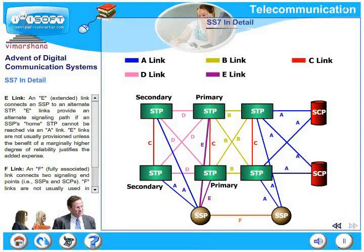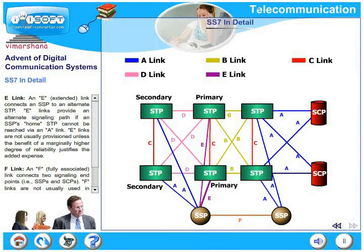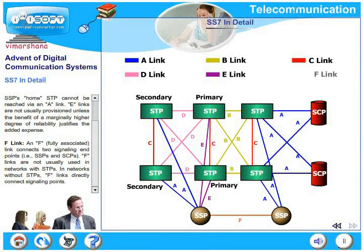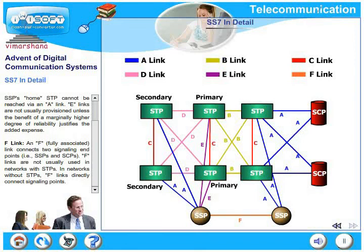An E-link connects an SSP to an alternate STP. E-links provide an alternate signaling path if an SSP's home STP cannot be reached via an A-link. E-links are not usually provisioned unless the benefit of a marginally higher degree of reliability justifies the added expense. An F-link connects two signaling endpoints — SSPs to SSPs or SEPs to SEPs. In networks without STPs, F-links directly connect signaling points. Please spend some time examining the figure to understand the various link types used in SS7.